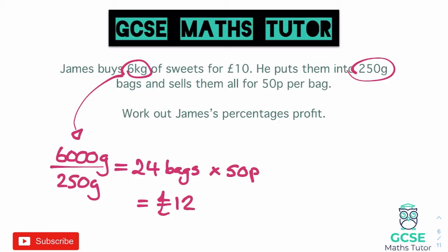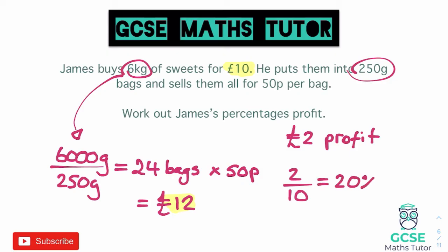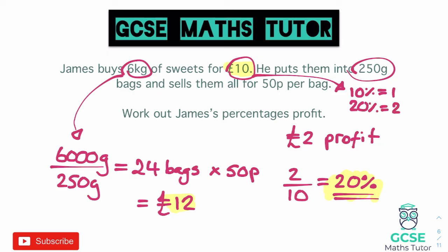James sold for £12 and paid £10, so profit is £2. Writing 2 over 10 as a fraction, that's straightaway 20%. Multiplying numerator and denominator by 10 confirms 20 over 100, so 20%. Using the percentage method: 10% of £10 is £1, and to get to £2 profit you double it, confirming 20%.